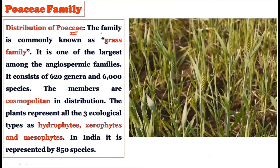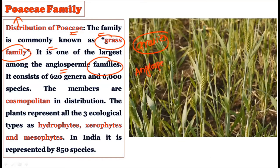The Poaceae family is commonly called the grass family because all grasses belong to it. It is one of the largest families among angiospermic families, comprising 620 genera and almost 6000 species, which is why Poaceae is considered a large family.